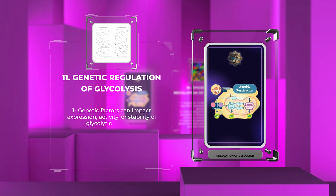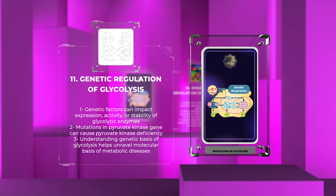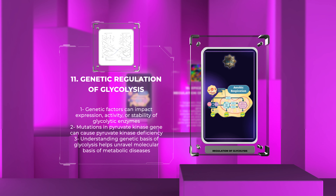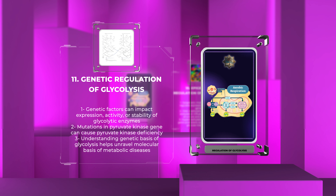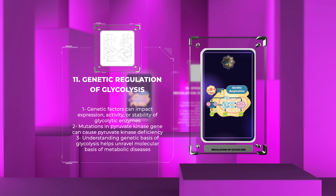Genetic factors also play a role in the regulation of glycolysis. Polymorphisms or mutations in genes encoding glycolytic enzymes can impact their expression, activity, or stability. For example, mutations in the gene encoding pyruvate kinase can cause pyruvate kinase deficiency, a rare genetic disorder characterized by impaired red blood cell metabolism and hemolytic anemia. Understanding the genetic underpinnings of glycolysis helps unravel the molecular basis of metabolic diseases and may pave the way for targeted therapeutic interventions.